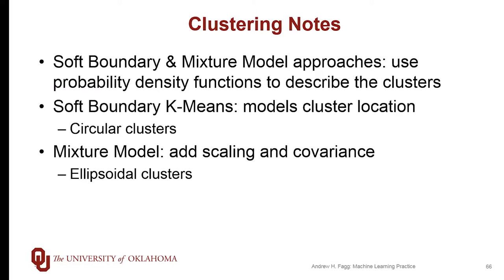With the soft boundary approach, we're specifying the cluster location, and we're really describing circular clusters in the feature space. Once we got to mixture models, we also added scaling and covariance to the underlying Gaussian distributions. This allows us to talk more generally about different kinds of cluster shapes — in particular, we can now specify ellipsoidal clusters. We can squish or stretch certain dimensions, and we can rotate the ellipsoid, which captures covariance between different features.